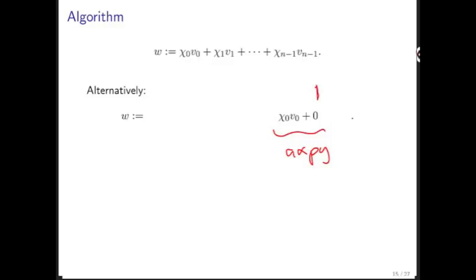Why? 0 is a vector and then this is a scalar times a vector which you add to that vector. Once you've computed this vector, you take a scalar times the second vector and add it to that.